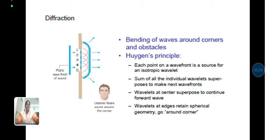Some of the individual wavelets superpose to make the next wavefronts. Wavelets at the center superpose to continue forward waves. Wavelets at the edge retain the spherical geometry and go around corners.